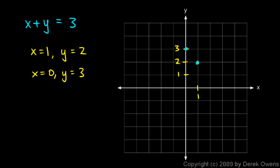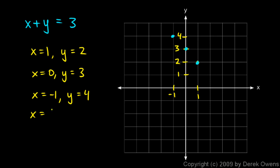Let's find another solution: x equals negative 1 and y equals 4. That's true because negative 1 plus 4 equals 3. On the graph, x is negative 1 and y is 4 gives us this point. One more: x equals 1.5 and y equals 1.5 — that's halfway between 1 and 2 on both axes — and 1.5 plus 1.5 equals 3. So I've got four points graphed.